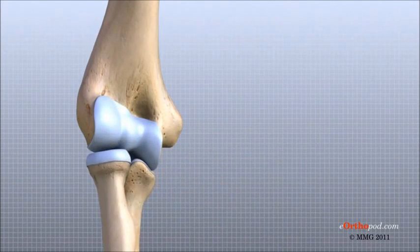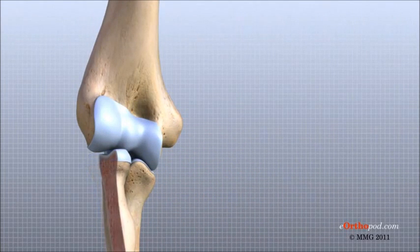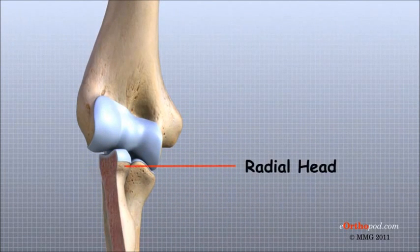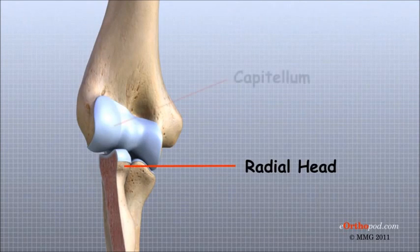To make this motion possible, the radial head is shaped like a smooth knob with a shallow cup at the end. The shallow cup fits against the capitellum.